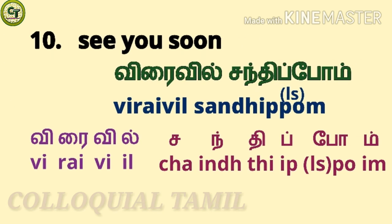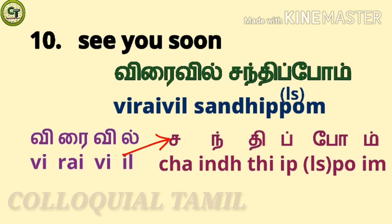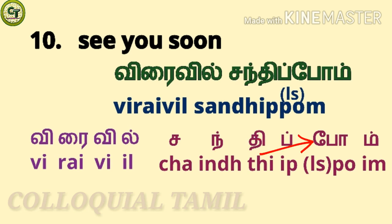To say 'see you soon,' say virayvil sandhippom. For virayvil: 'vi' is a short sound letter, 'rai' uses the small ra, then 'vi' is a short sound letter, and 'il' is the small il — together: virayvil. For sandhippom: 'cha' is a short sound letter (which may also sound as 'sa' in some words), 'ind' is a consonant, 'thi' is a short sound letter, 'ip' is a consonant, 'po' is a long sound letter, and 'im' is a consonant — together: sandhippom. One more time: virayvil sandhippom.